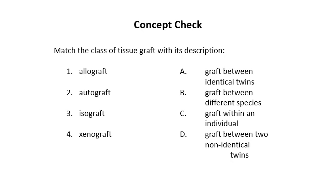Quick concept check: match the graft types with their descriptions. An allograft is a graft between non-identical individuals of the same species. An autograft is a graft within an individual. An isograft is between identical twins. A xenograft is between different species. I hope this was helpful to your understanding of immunopathology — let me know if you have any questions.